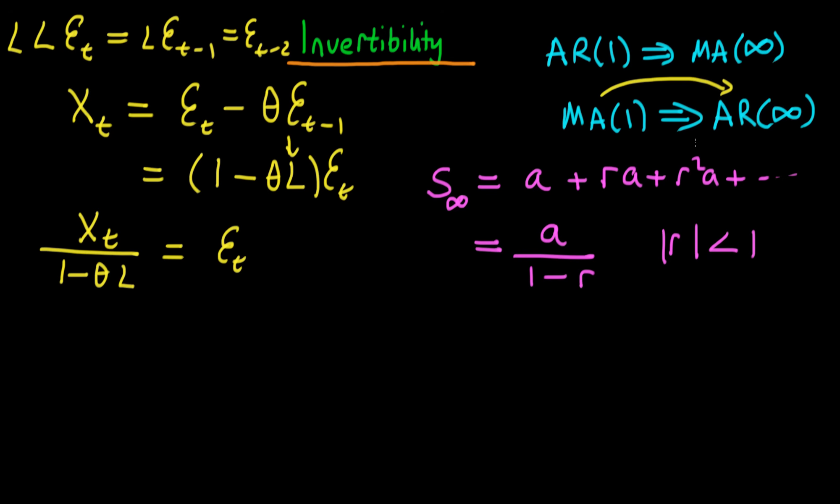And when we write that the infinite sum of geometric series is this expression here it looks quite similar to that which we've got here on the left hand side. Essentially we could equate a with XT and r with theta L. And it turns out that we can actually do that provided that the same conditions hold.